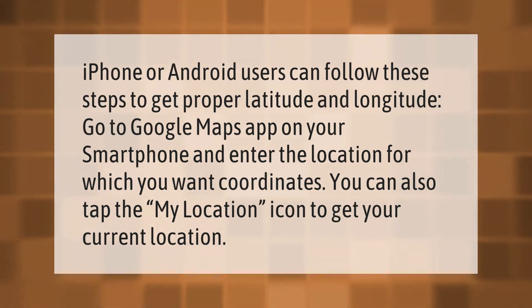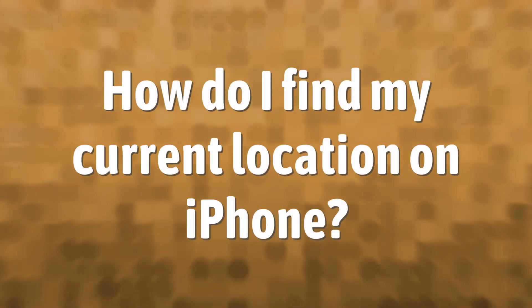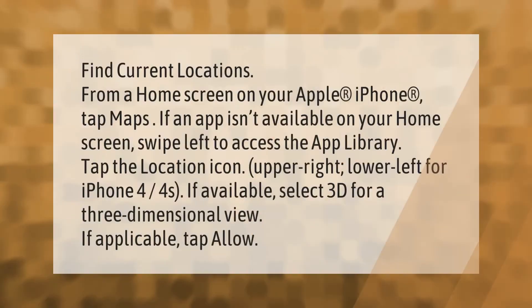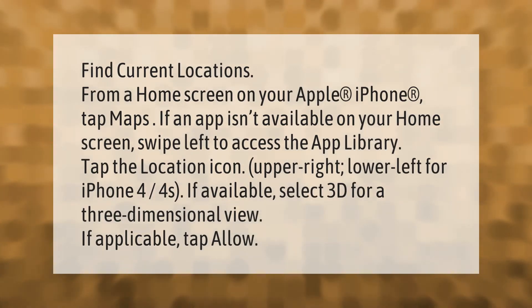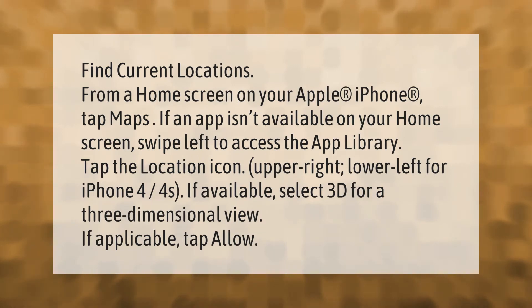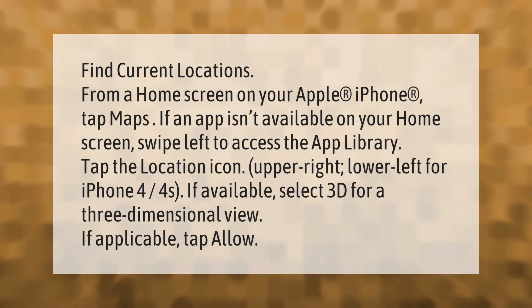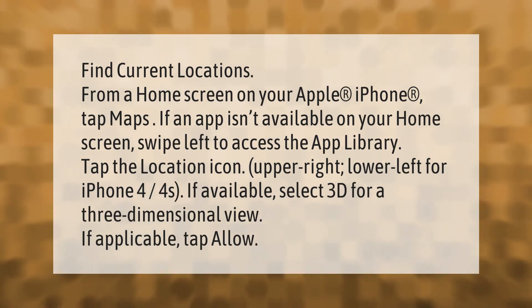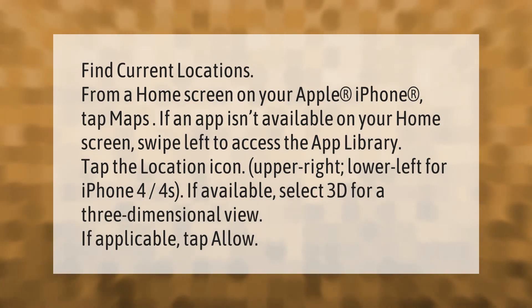To find current locations from a home screen on your Apple iPhone, tap Maps. If the app isn't available on your home screen, swipe left to access the App Library. Tap the location icon.